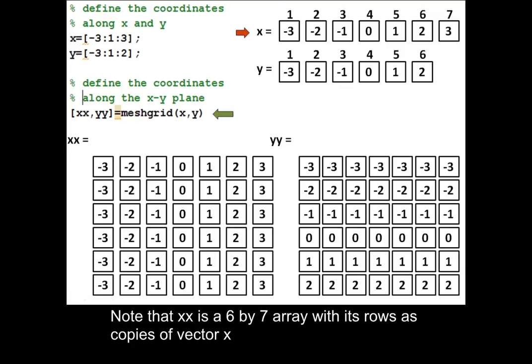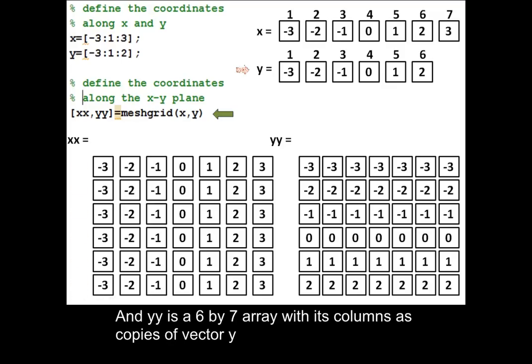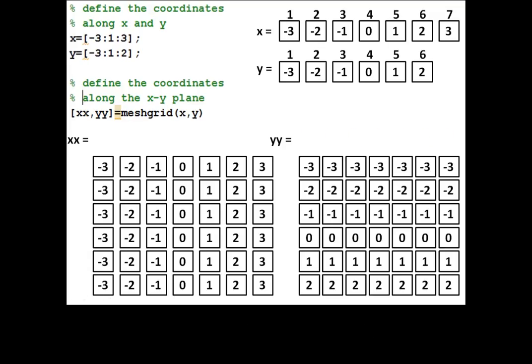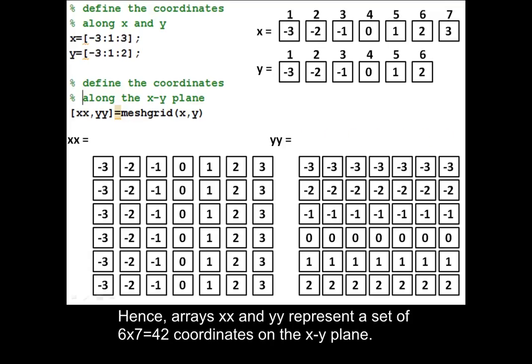Note that XX is a 6 by 7 array with its rows as copies of vector X, and YY is a 6 by 7 array with its columns as copies of vector Y. Hence, arrays XX and YY represent a set of 42 coordinates on the X-Y plane.